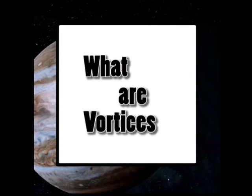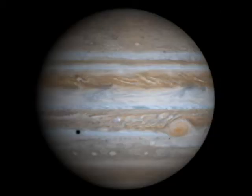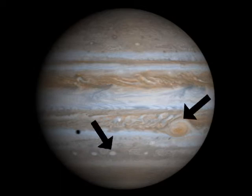Now the vortices are all those little white, red, and brown spots that you see on Jupiter. They're basically storms of high winds in Jupiter's atmosphere. You might know the great red spot, or the little red spot which was discovered in 2006, or the oval that was discovered in 2000. These are all vortices.